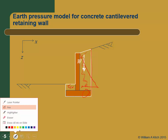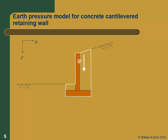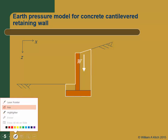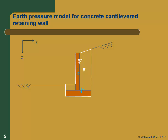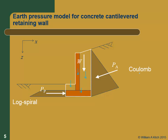If we do that, the free body diagram will include the weight of the wall material, normally broken down into at least four pieces: the weight of the stem, the weight of the footing, the weight of the soil behind the wall, and the weight of the soil in front of the wall. On the back of the wall you'll have an earth pressure. You can use Coulomb or Rankine — Rankine is probably more common for this wall design, but Coulomb gives a better estimate of earth pressures, particularly when there's a back slope.